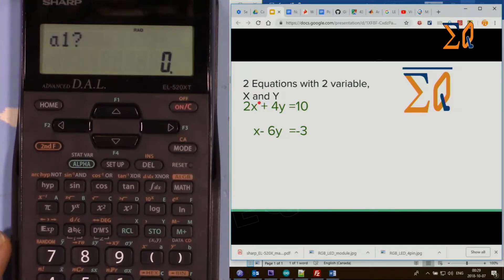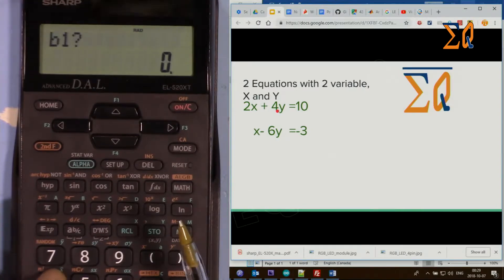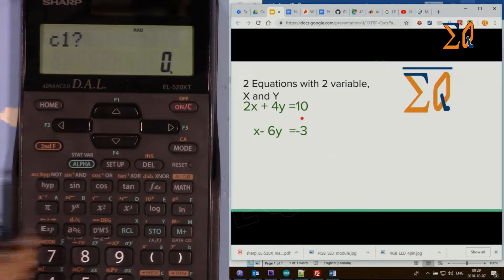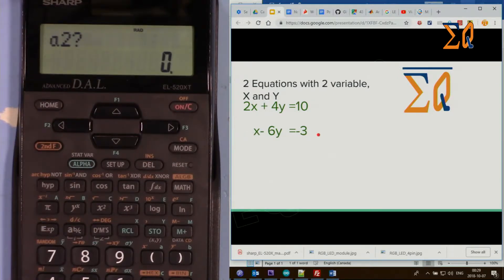Now this is a1, enter 2 and then equal sign. For b1 it's plus 4, which is 4, and then for c1 enter 10. Now it goes to a2, the 2 refers to the second equation, the coefficient of x is 1 equal, and this is minus 6.